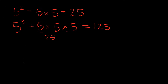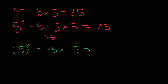Now let's do it with negative numbers. What if I had negative 5 raised to the second power, or negative 5 squared? Well, this is equal to negative 5 times negative 5. We have a negative times a negative, so that means our answer is going to be positive. Then we just have 5 times 5, which is 25. So negative 5 squared is equal to positive 25.